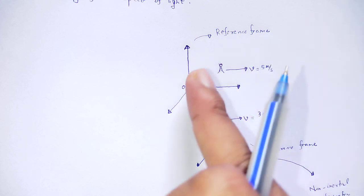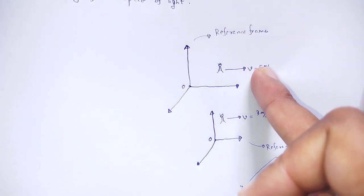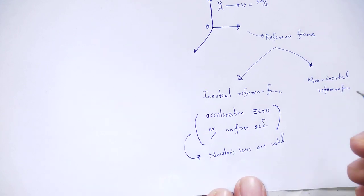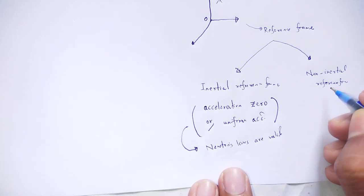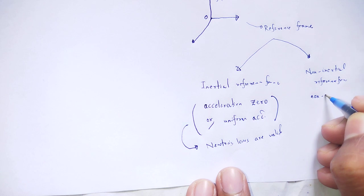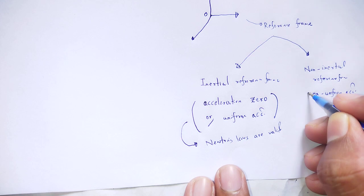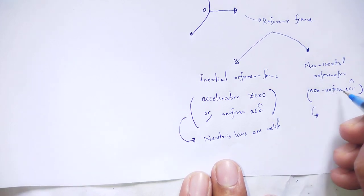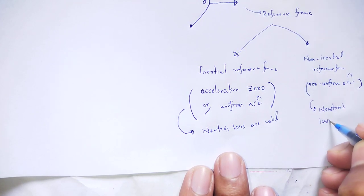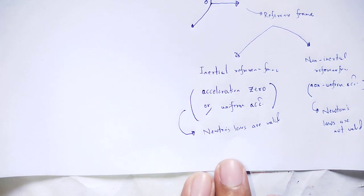When the acceleration is not uniform — for example, the velocity changes from 2 meters per second to 5 meters per second — this is the non-inertial reference frame. In a non-inertial frame of reference, Newton's laws are not valid.